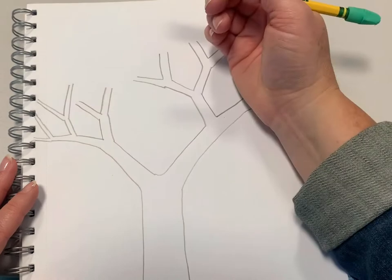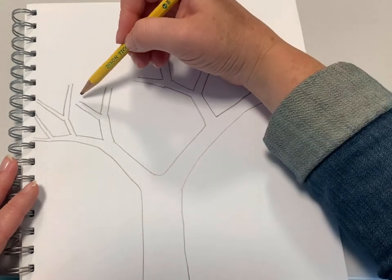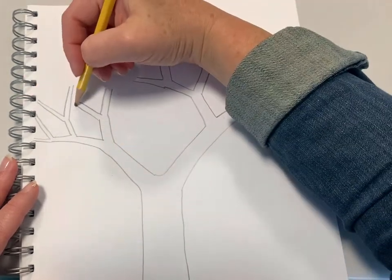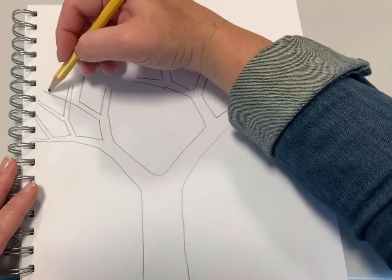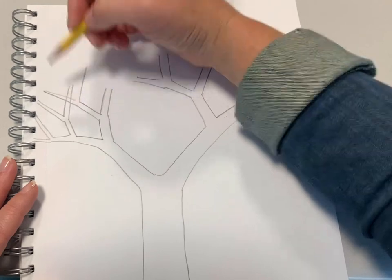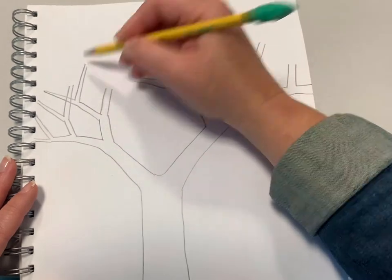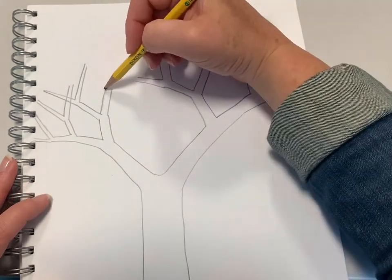So as your tree grows and you start to encounter the branches getting really close to each other, just draw right over your lines. It's going to feel a little uncomfortable, but trust me, this is what a real artist would do.